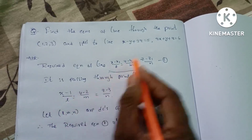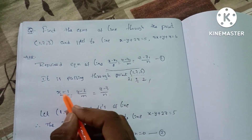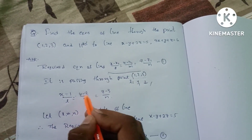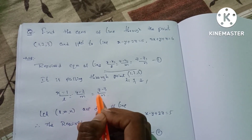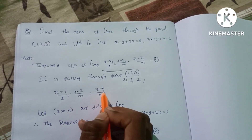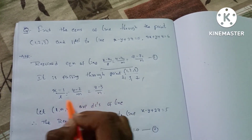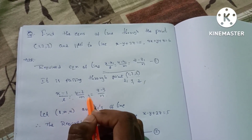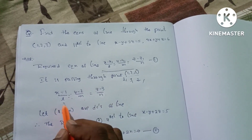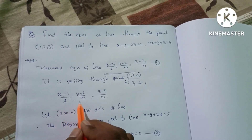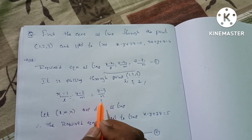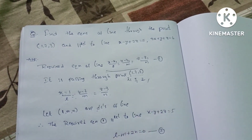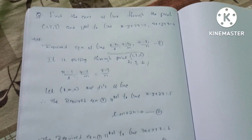The symmetric form of the line equation is: (x - x1)/L = (y - y1)/M = (z - z1)/N. Substituting the point gives: (x - 1)/L = (y - 2)/M = (z - 3)/N, where L, M, N are the direction cosines of the line.